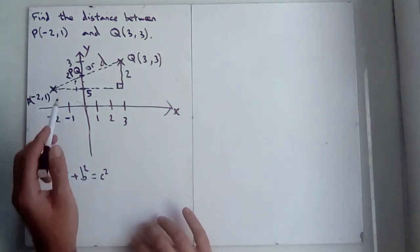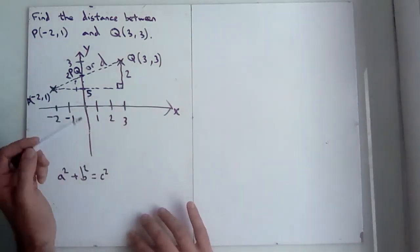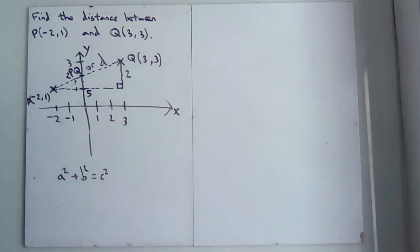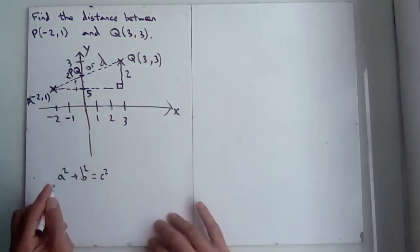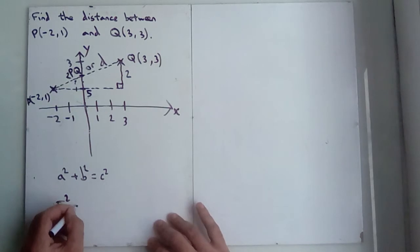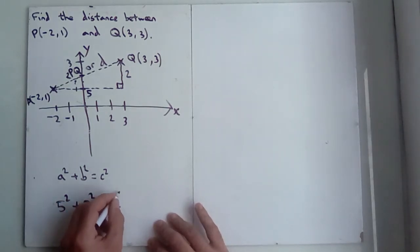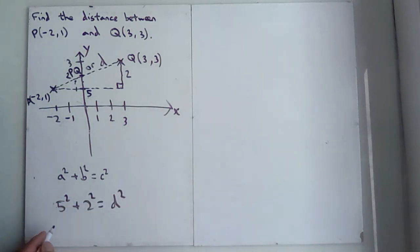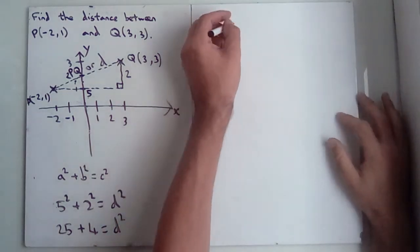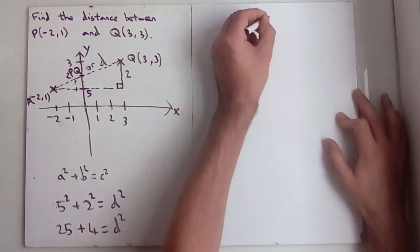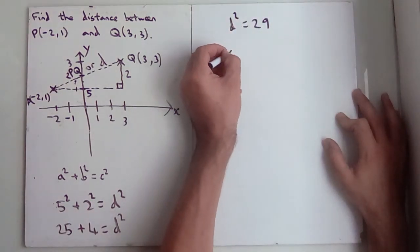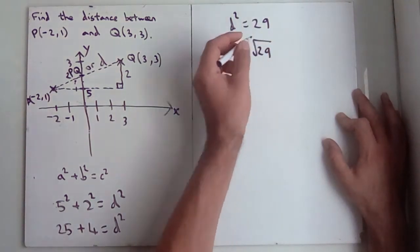So in our case, the a and the b are the 2 and the 5, and the c is either PQ or d, whichever we want to call it. So let's say 5 squared plus 2 squared equals d squared. 5 squared is 25. 2 squared is 4 equals d squared. So 25 plus 4 is 29. So d squared equals 29, which means that d equals the square root of 29.